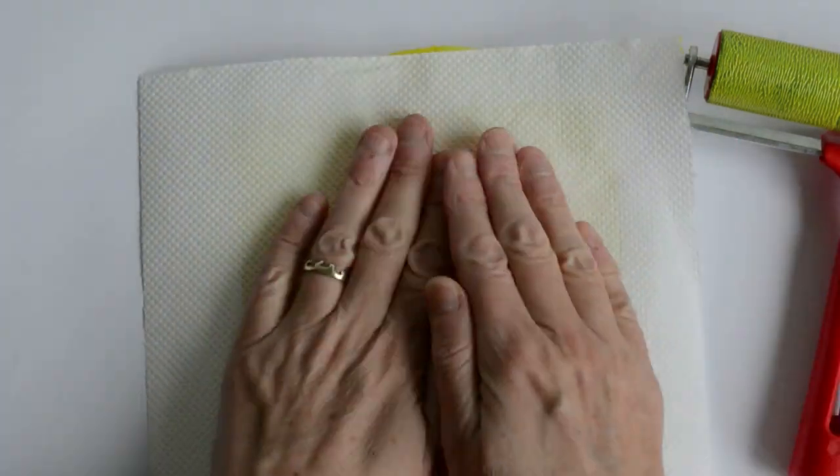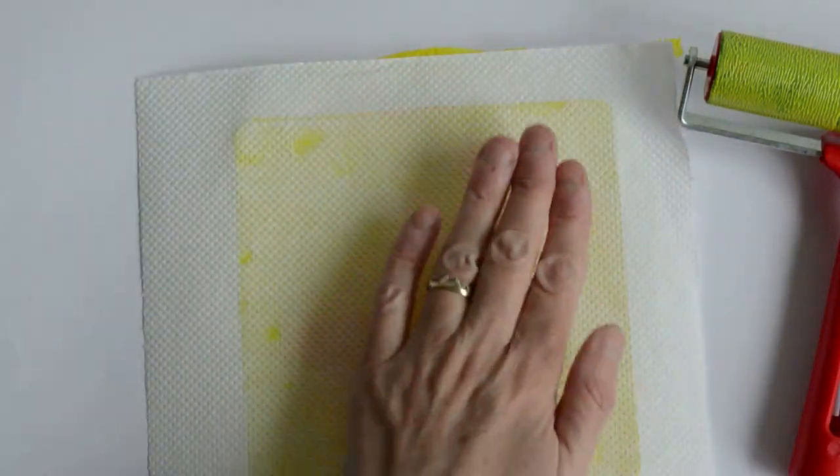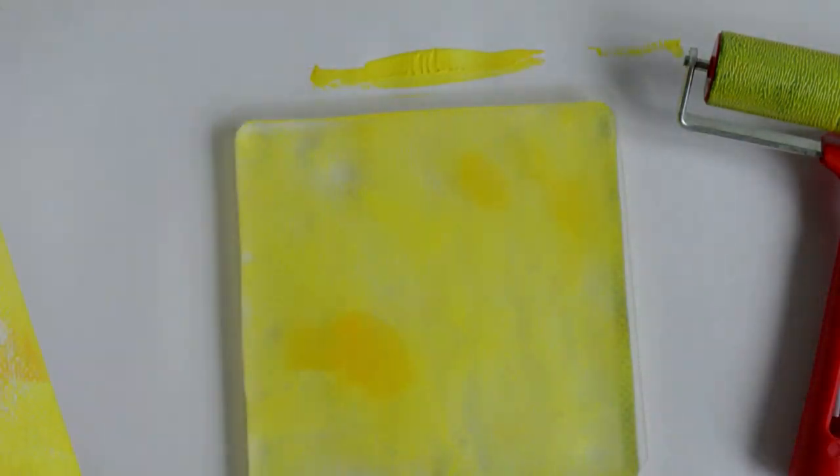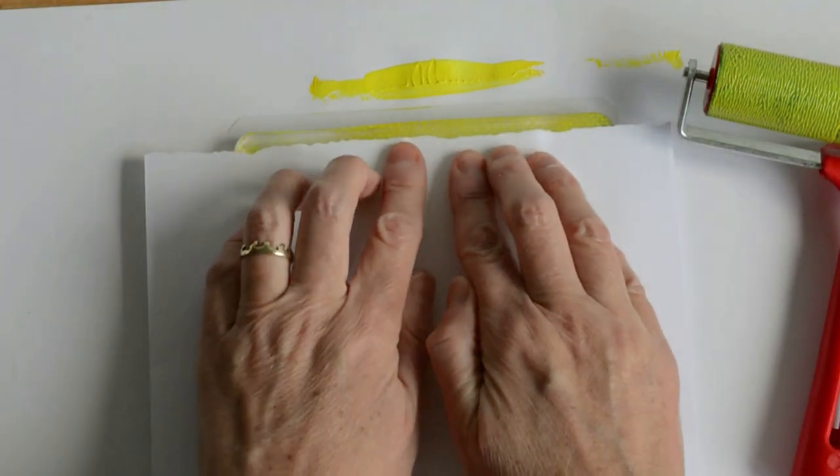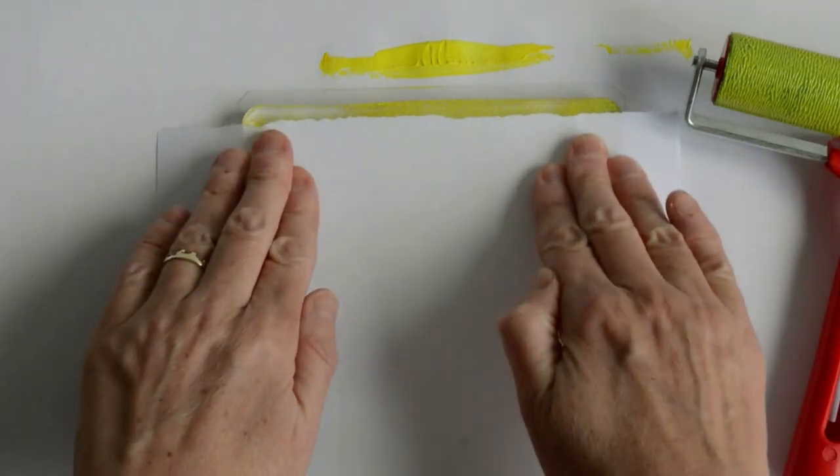Now for the fun bit: adding different textures before you print. I'm using kitchen roll here just to take a bit of the paint off the plate.